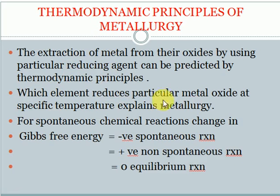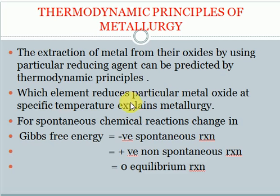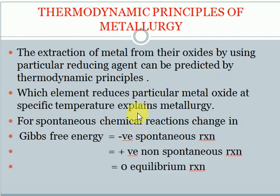For example, zinc oxide reduction using carbon requires 673 Kelvins temperature. Copper oxide is also reduced with carbon but requires 1000 Kelvins. For iron oxide reduction, carbon monoxide is used, and the temperature range is 400 to 1500 Kelvins. These differences in temperature requirements are explained by the thermodynamic concept of Gibbs free energy.